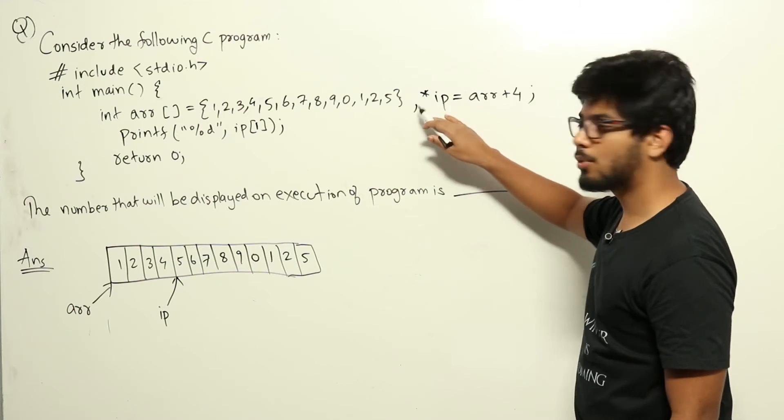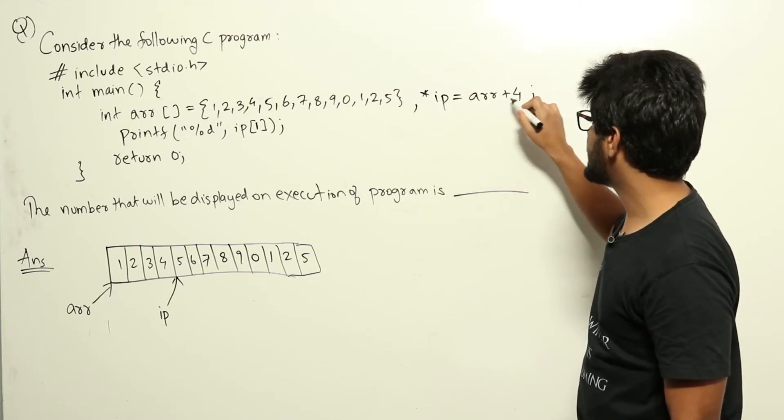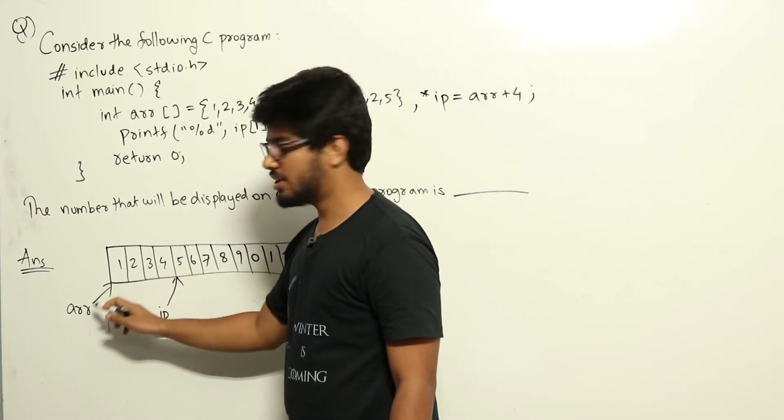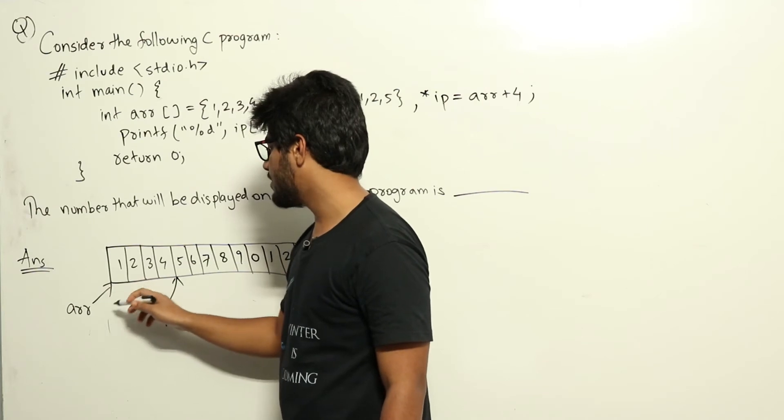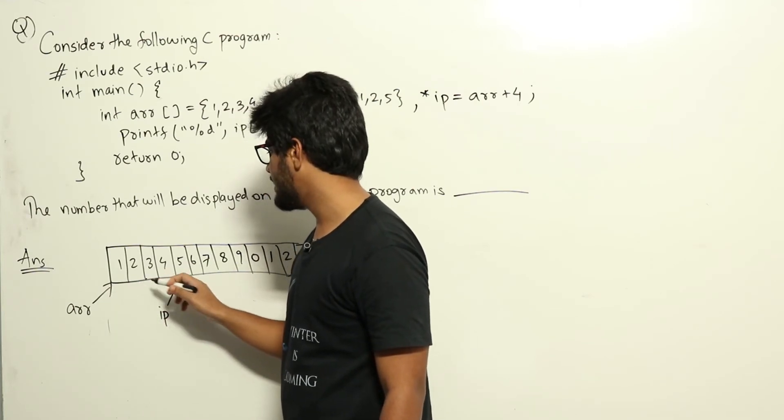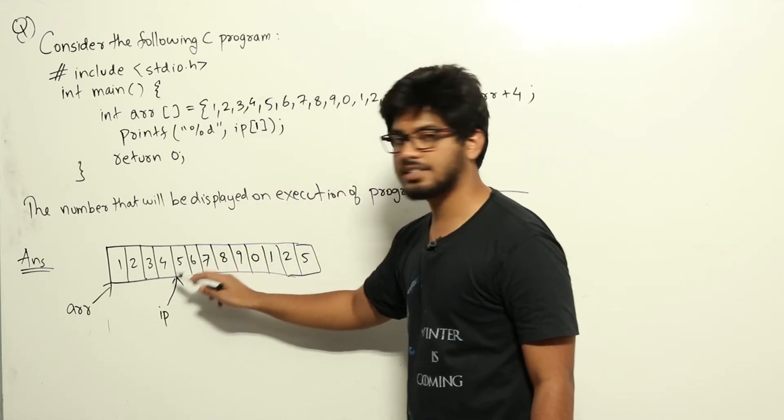When we do an operation like this, IP is a pointer, array is also a pointer ARR. We are increasing that pointer's value by 4, which means ARR is pointing here, so ARR + 1 will be a pointer to this location, + 2 will be a pointer to this location, three, four. So array + 4 will be a pointer to this location.